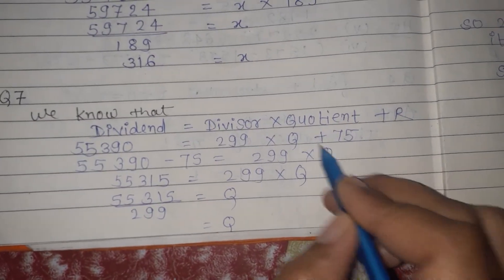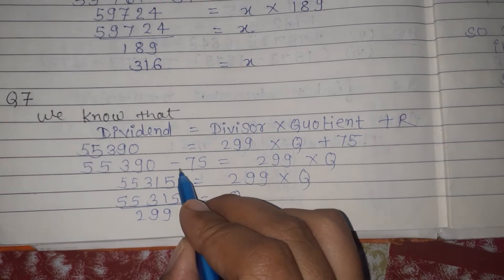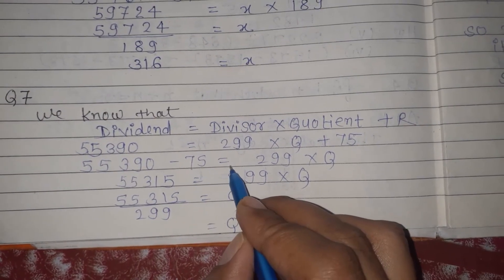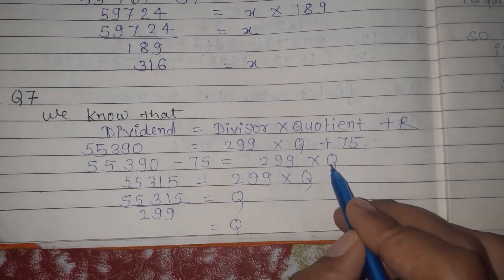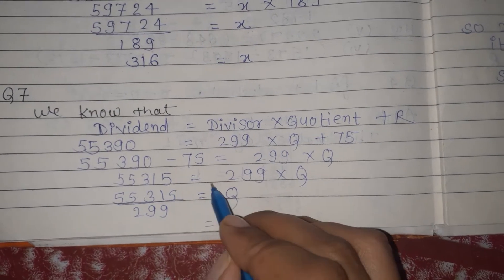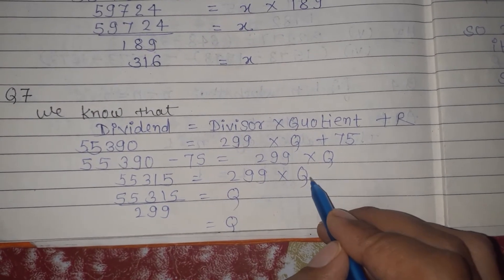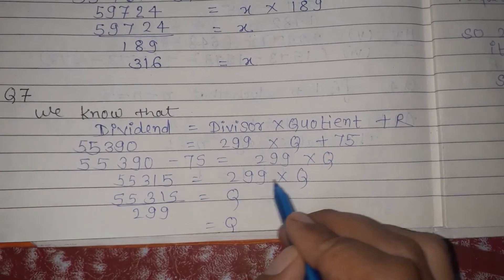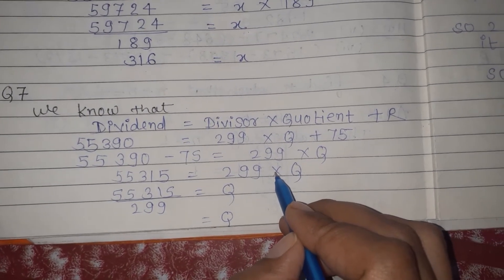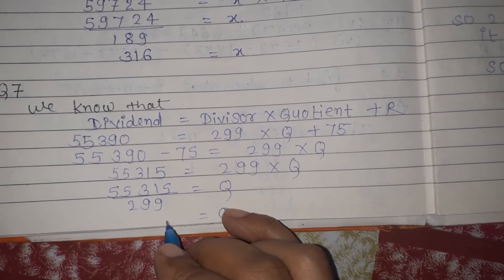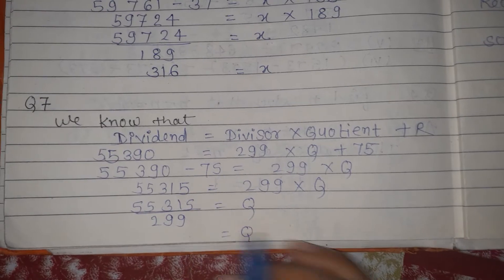First, we shift plus 75 to the other side, making it minus, so we get 55390 minus 75 is equal to 299 into X. Subtracting, we get 55315 is equal to 299 into quotient. To find the value of Q, we shift 299 from multiplication to division. That gives us the value of Q. This is how you can solve question number 7.